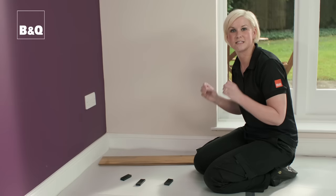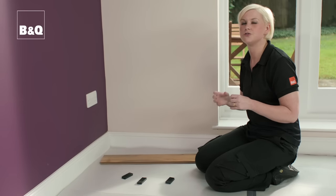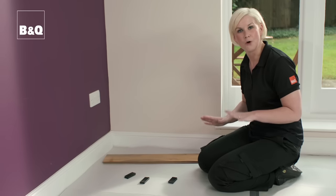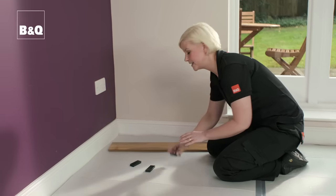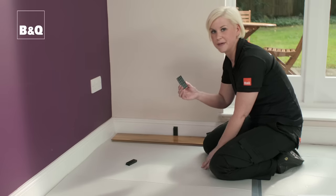Right, we've talked about expansion gaps, and this is needed as laminate and solid wood flooring expands and contracts due to the changes in temperature and humidity. So to stop your floor buckling, you must leave a 10mm gap for laminate, and to make it easier you have these expansion spacers.